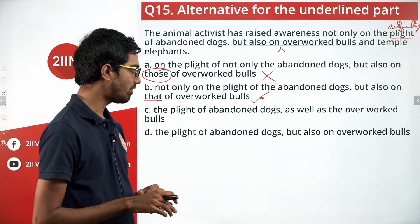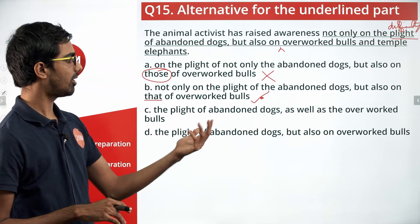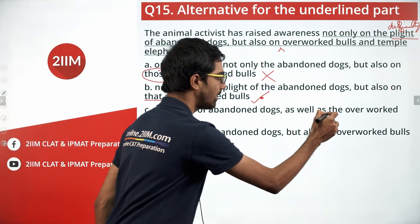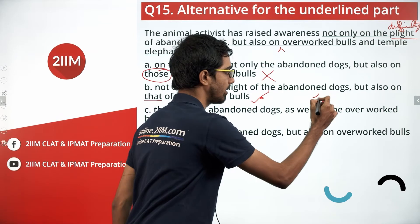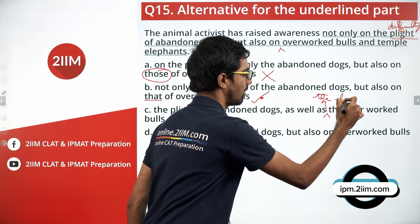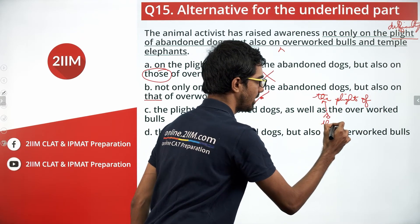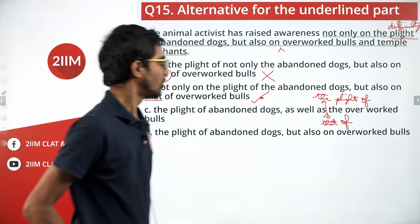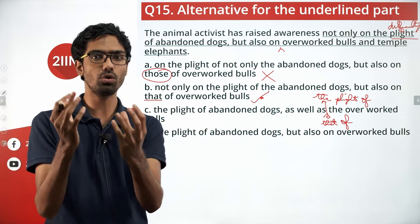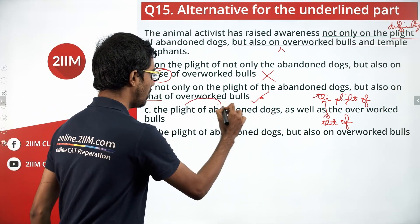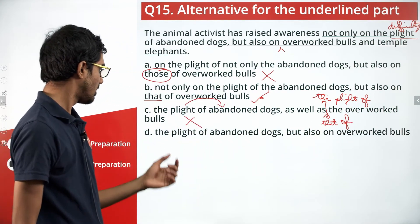Option C: 'The plight of abandoned dogs as well as the overworked bulls' — there is a comma and then 'as well as,' but this is missing 'the plight of' or 'that of the overworked bulls.' The difficulty should be tied to both animals. Here, 'plight' is tied only to abandoned dogs and is not tied to the overworked bulls. So this is not the right answer.